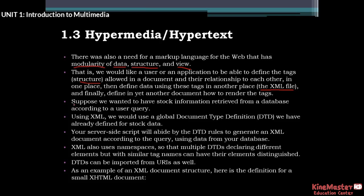Now suppose that we want to retrieve stock information from a database according to a user query. Using XML, we would use a global Document Type Definition (DTD). We have already defined it for stock data.